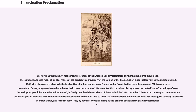Dr. Martin Luther King Jr. made many references to the Emancipation Proclamation during the Civil Rights Movement. These include a speech made at an observance of the hundredth anniversary of the issuing of the proclamation, made in New York City on September 12, 1962, where he placed it alongside the Declaration of Independence as an imperishable contribution to civilization, and declared that all tyrants — past, present and future — are powerless to bury the truths in these declarations. He lamented that despite a history where the United States proudly professed basic principles inherent in both documents, it sadly practiced the antithesis of these principles.